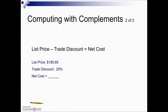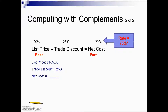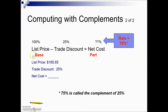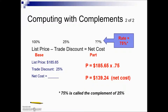In this next example, we're given a list price which is our base, and they're indicating a 25% trade discount. What percent would the net cost represent? The complement of 25%: 100 minus 25 gives us 75% — we call this the complement. So we have the rate, we're looking for the net cost which is acting as the part, and we have our list price as the base. To find the net cost, we take the list price times the complementary rate of the trade discount.